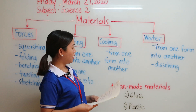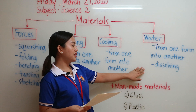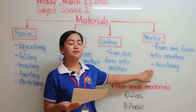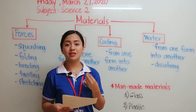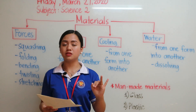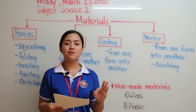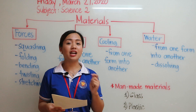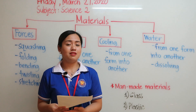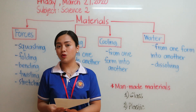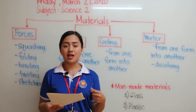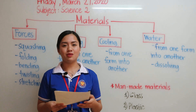Materials can also be changed by the process of dissolving. Dissolving means the material will actually disappear. For example, sugar, salt, and coffee — if we mix these materials with water, they actually disappear. However, there are some materials that don't disappear even when mixed with water. For example, sand — no matter how much we stir sand with water, the tiny grains remain the same.